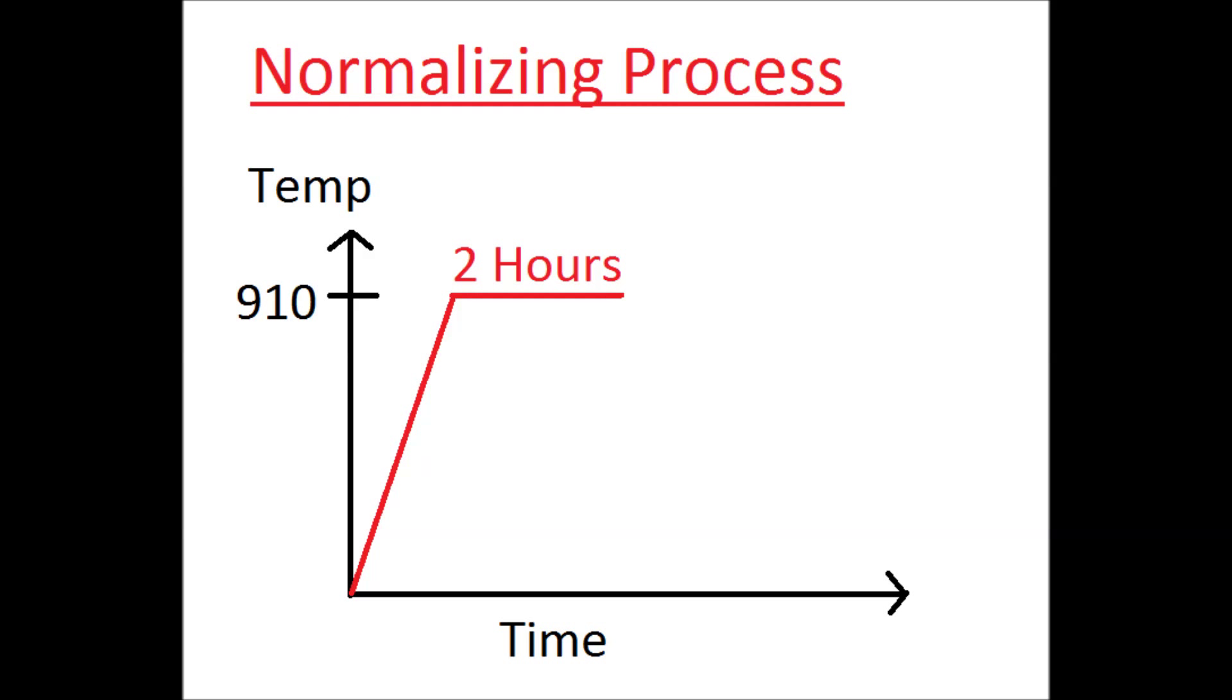Normalizing, or air quenching, is an annealing heat treatment. The difference is that the material slowly cools in ambient air versus in a furnace.